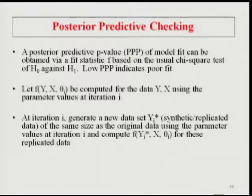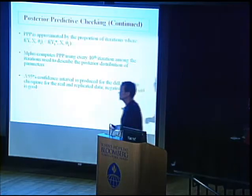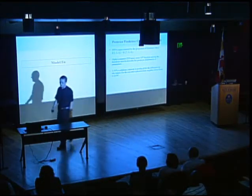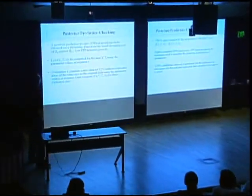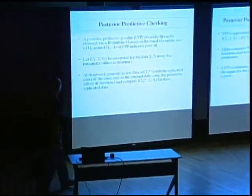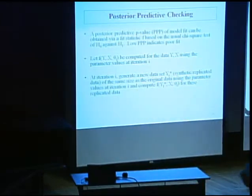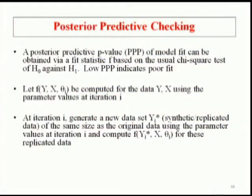Posterior predictive checking is an approach developed as an add-on to Bayesian analysis. It's a really useful general idea that can be used even in maximum likelihood. We're going to work our way towards a p-value, which is really a frequentist concept — so this is trying to bridge the gap between frequentist and Bayesian thinking. We'll have a posterior predictive p-value, using a very specific version of posterior predictive checking for our purposes.